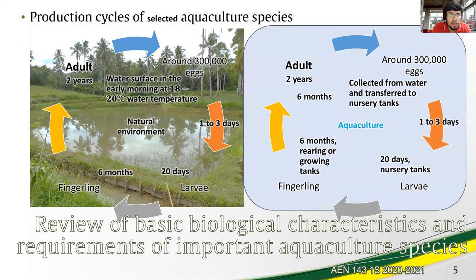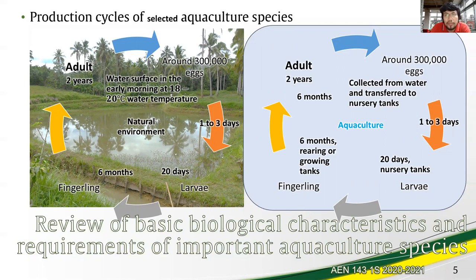We begin with the spawning of adult carp at the water surface in the early morning at 18 to 20 degrees water temperature. The copulation will yield around 200,000 fertilized eggs. These eggs will hatch into larvae or yolk sac fry in one to three days. The larvae or yolk sac fry is about 5.5 millimeters in length, very delicate and transparent. It feeds on yolk sac until consumed within three days, after which it begins foraging for food by filtering the water for organisms.